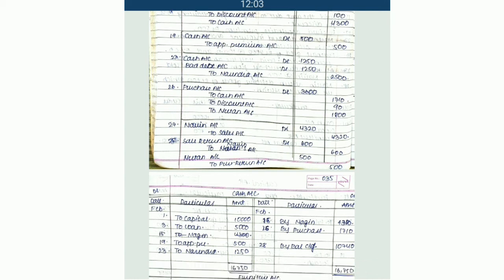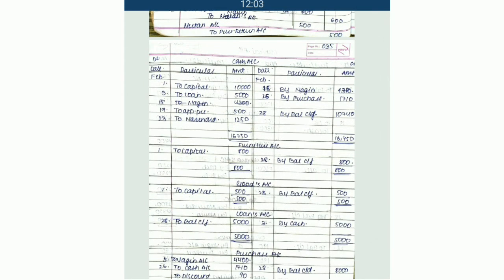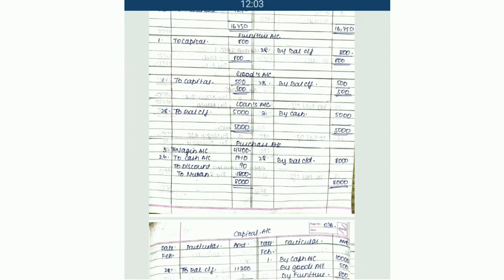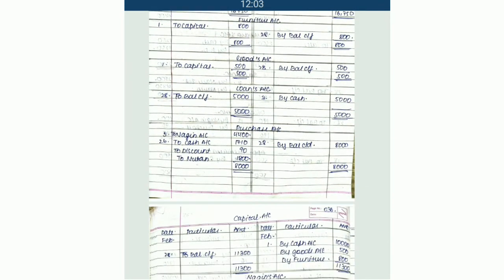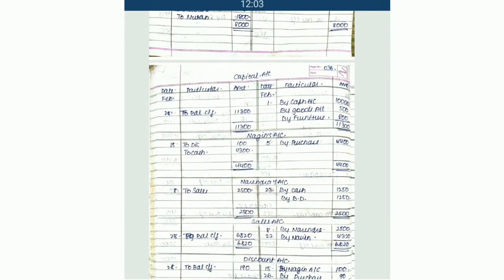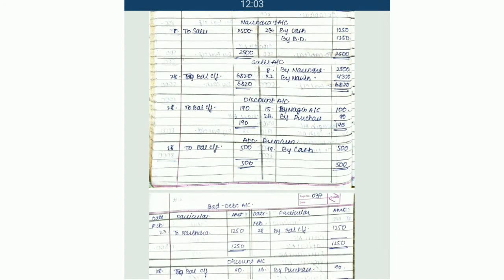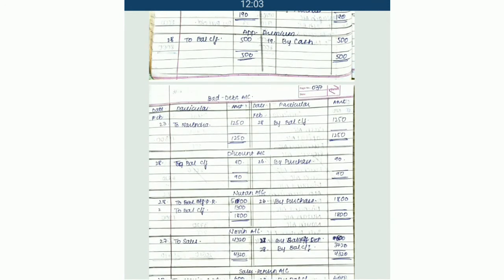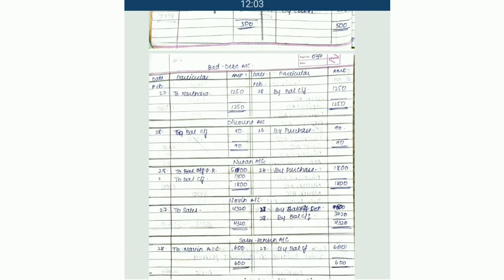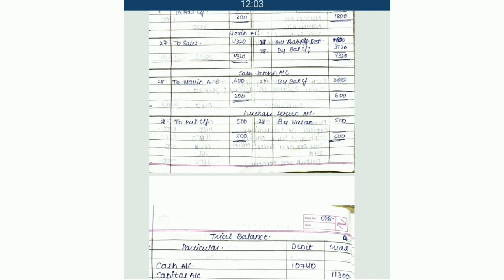So you can see over here, we have prepared: cash, goods, loan account, purchase account, capital account, Nagin account, Narendra account, sales, discount, apprentice premium, bad debt, discount, Newton, Naveen, sales return, and purchase return.